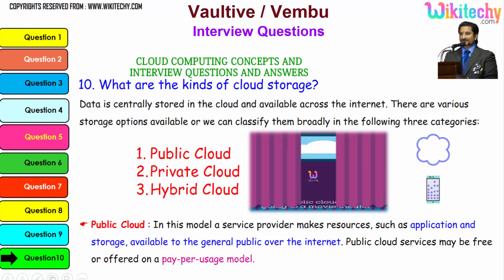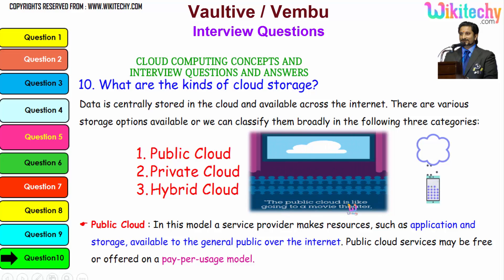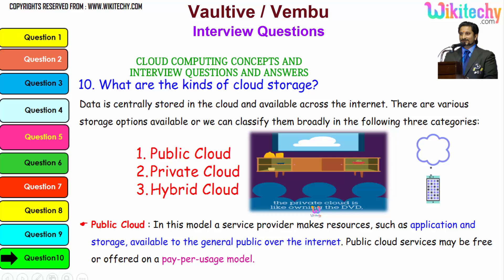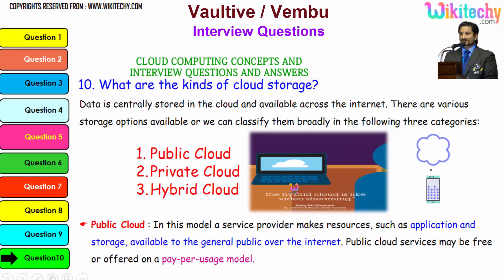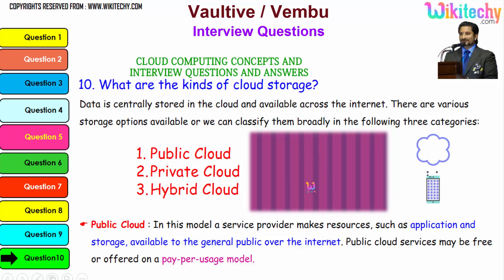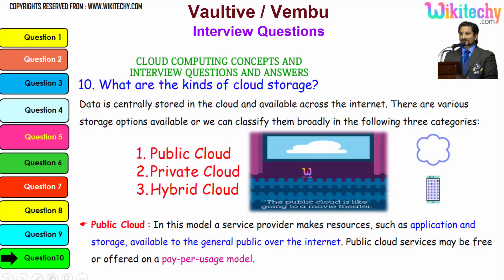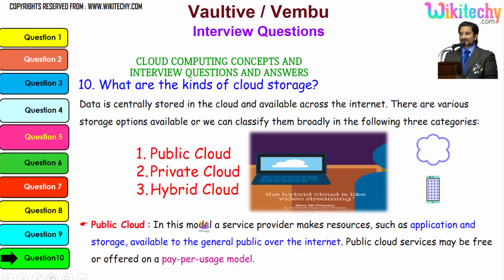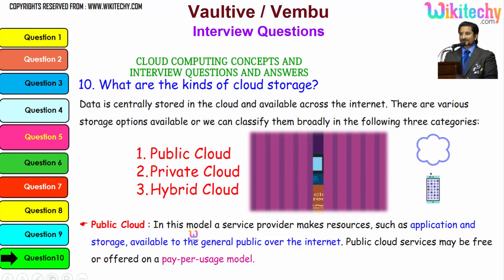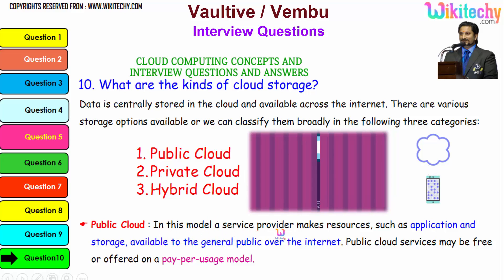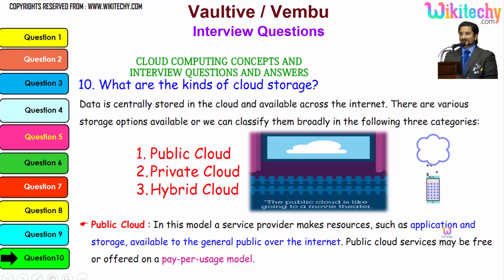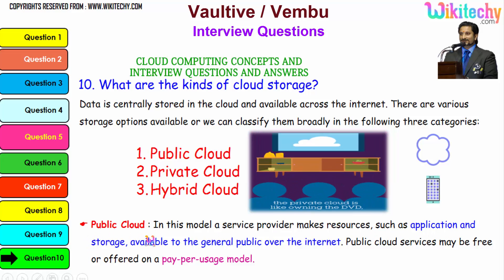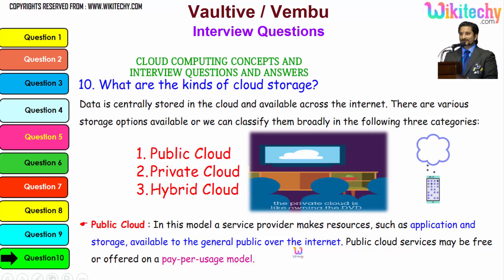You can see the animated visuals here. The public cloud is like going to a movie theater, private cloud is like owning a DVD at home, and hybrid cloud is like video streaming — a mix of private and public. In the public cloud model, a service provider makes resources such as applications and storage available to the general public over the internet.